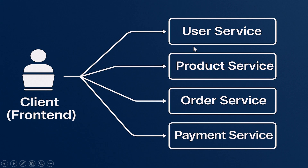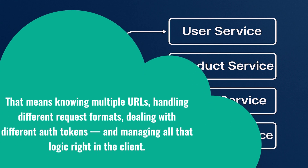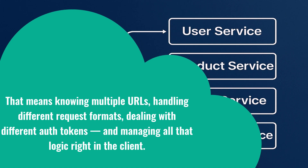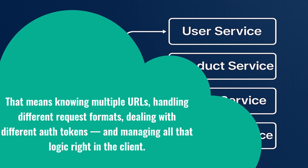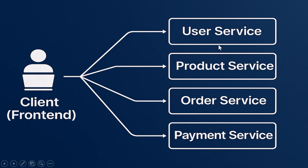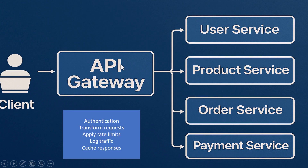Without an API gateway, the front end would have to call each of those services directly. That means knowing multiple URLs, handling different request formats, dealing with different auth tokens, and managing all that logic right in the client. That's a mess — it creates tight coupling between your front end and all your back-end services. Every time a service changes, your front end has to change too. That's where the API gateway comes in.